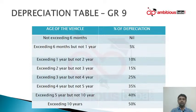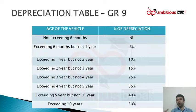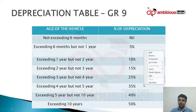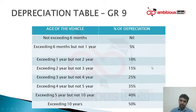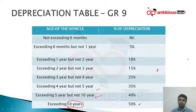Coming to depreciation table GR9 — this is the age-wise depreciation. Not exceeding 6 months: nil. Then 5%, 10%, 15%. Then a break: 25%, 35%. Then again: 40%, 50%. The area where there is a chance to make a mistake is exceeding 5 years but not exceeding 10 years. Most people apply 50% incorrectly to that bracket — 50% depreciation is only for vehicles exceeding 10 years. You have to be careful.